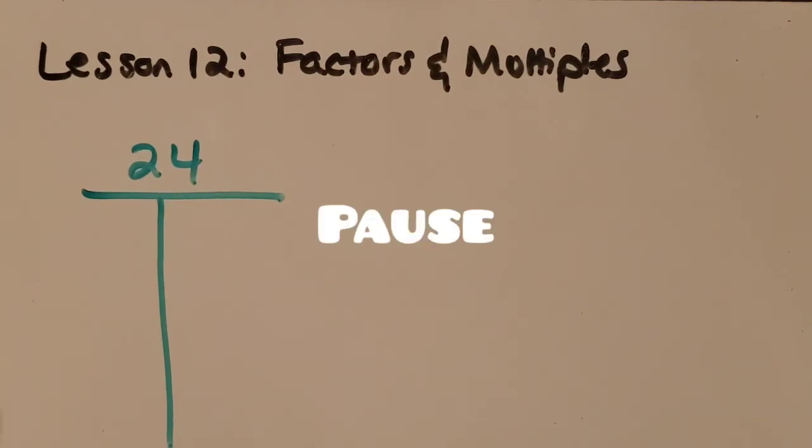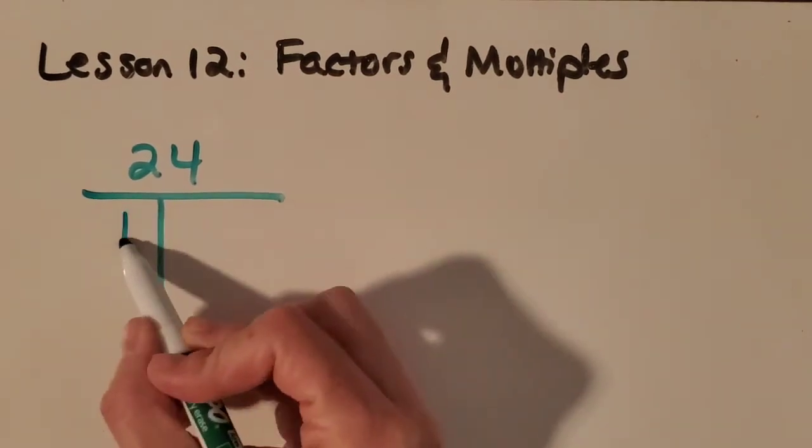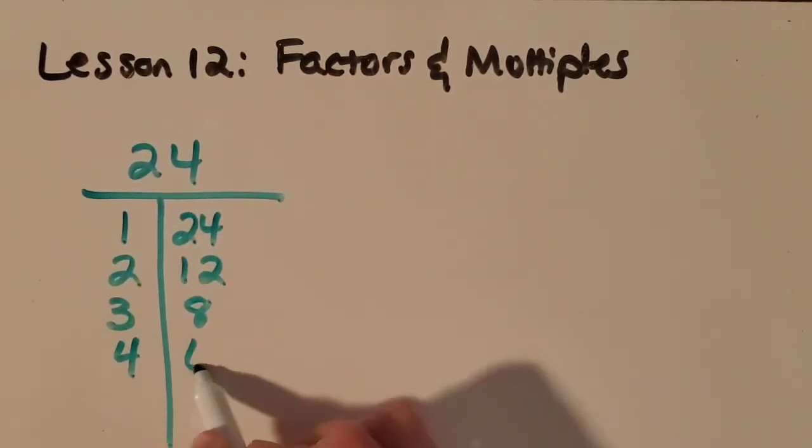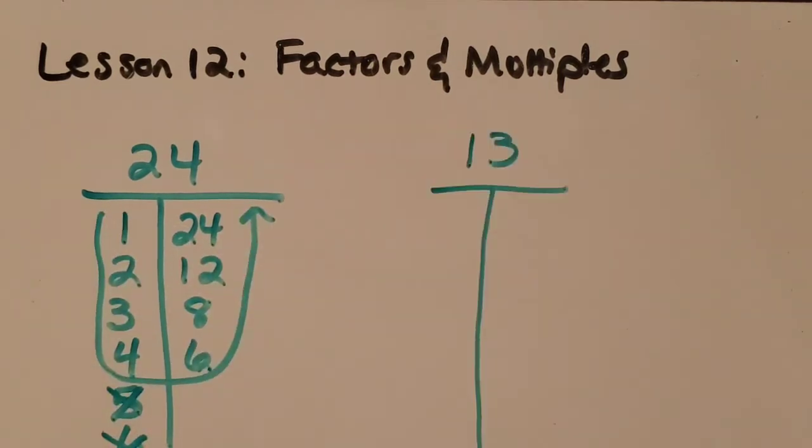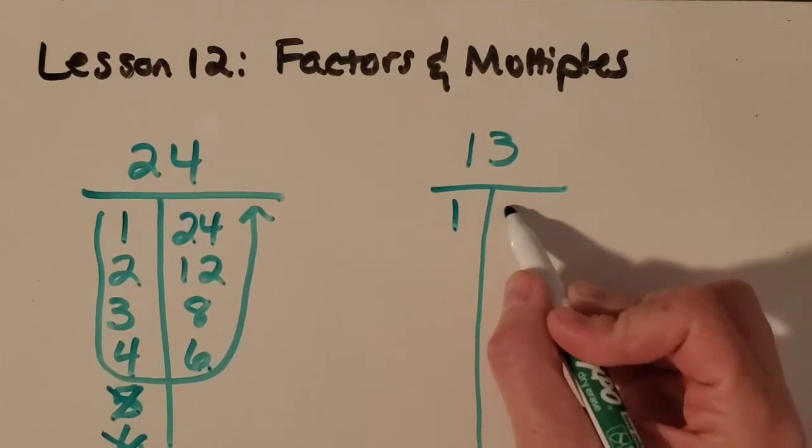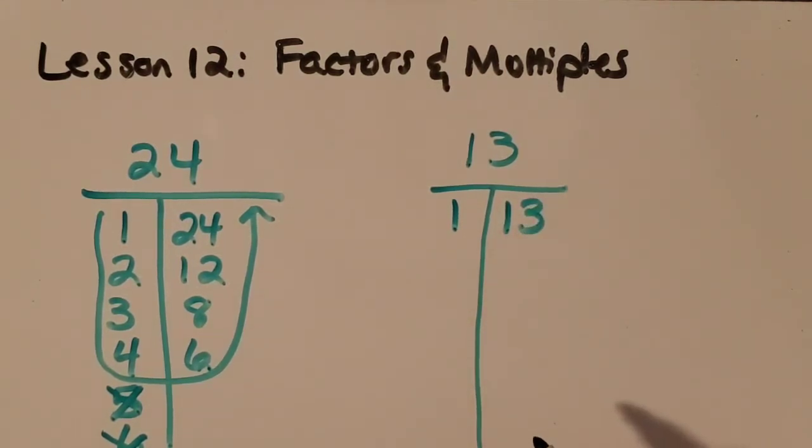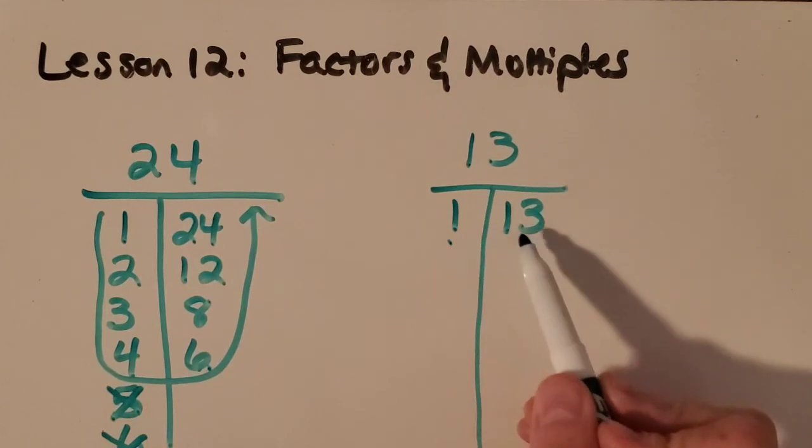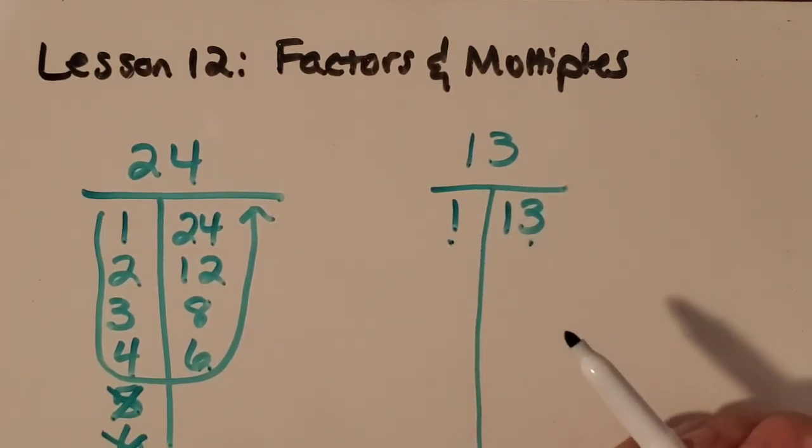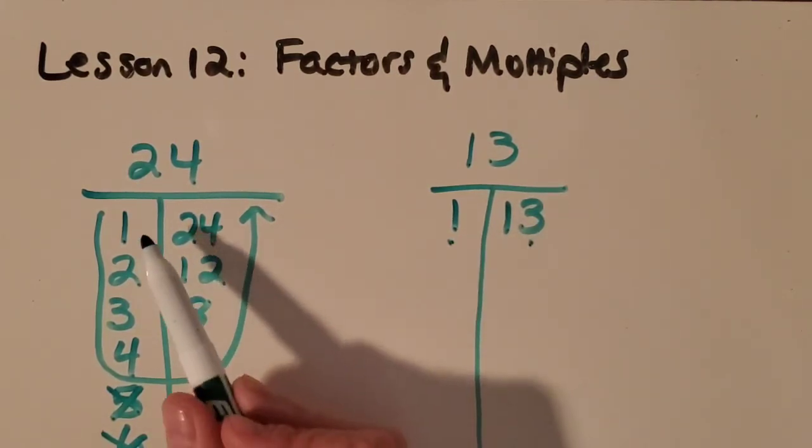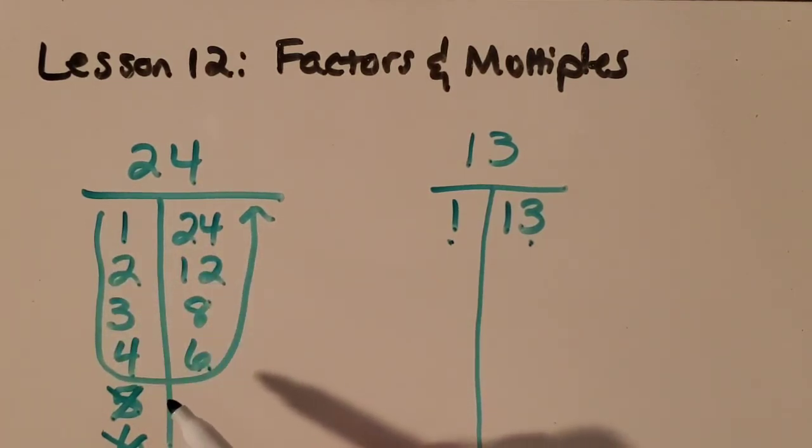Now I want you to pause the video and try it with twenty-four. What are the factors of twenty-four? Let's try it with the number thirteen next. Pause the video and see if you can find the factors of thirteen. Oh my goodness. All I can think of is one times thirteen. So some numbers only have two factors. One and themselves. Some numbers have a lot of factors. We're going to learn a little bit more about what those are called in the next video.